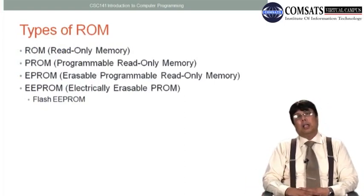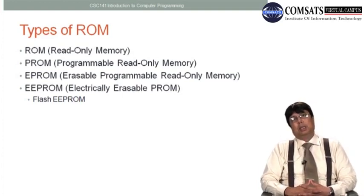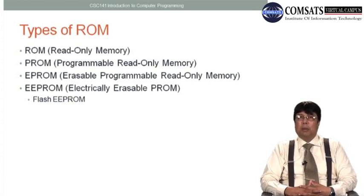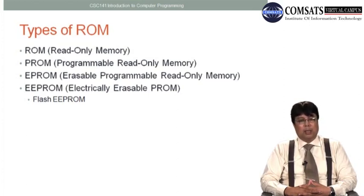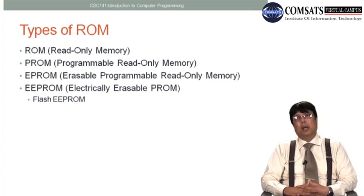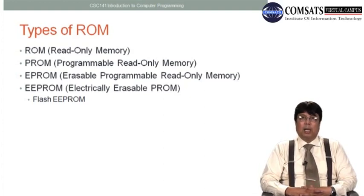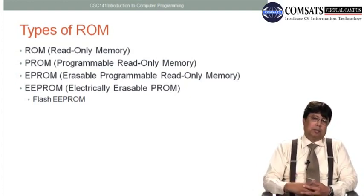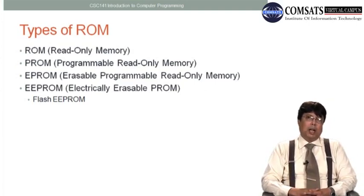We have discussed the types and terminologies of RAM, which is volatile memory. Let us now talk about the types of ROM. ROM maintains data — it is information permanently stored on a chip. ROM stands for Read-Only Memory. PROM is Programmable Read-Only Memory. Then we have EPROM — Erasable, Programmable, Read-Only Memory. And finally EEPROM — Electrically Erasable, Programmable, Read-Only Memory.